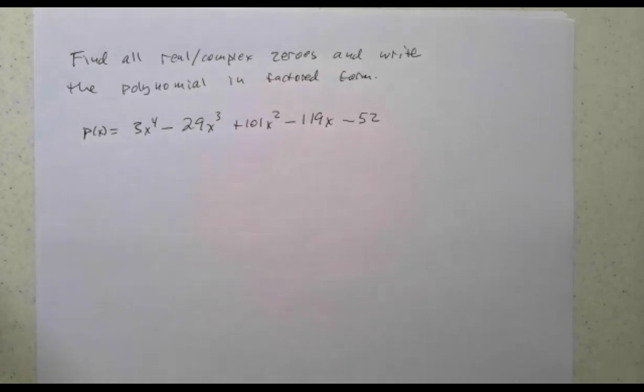Okay, we want to find all real and complex zeros and write the polynomial in factored form. Given p(x) = 3x^4 - 29x^3 + 101x^2 - 119x - 52. Pretty nasty.